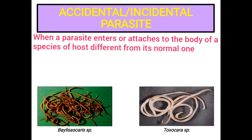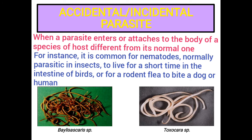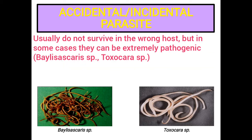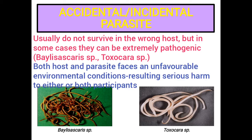Accidental or Incidental Parasites: When a parasite enters or attaches to the body of a species of host different from its normal one, it is called an accidental or incidental parasite. For instance, it is common for nematodes normally parasitic in insects to live for a short time in the intestine of birds, or for a rodent flea to bite a dog or human. Accidental parasites usually do not survive in the wrong host, but in some cases they can be extremely pathogenic, like Baylisascaris, Toxocara, etc.